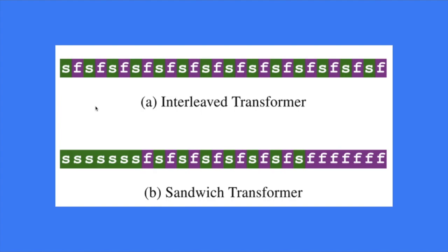This is the non-interleaved transformer, where you don't have that periodic structure — you can have asymmetry or symmetry, but not the regular attention/feed-forward alternation. The idea is to randomly reorder these sub-layers to see if a different arrangement performs better than the standard transformer.